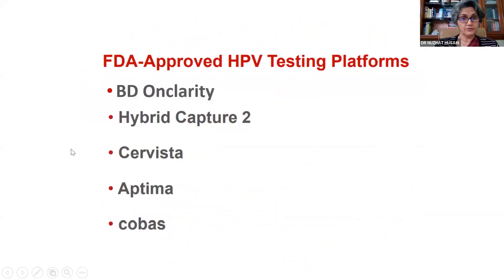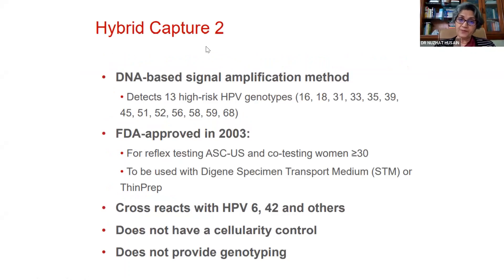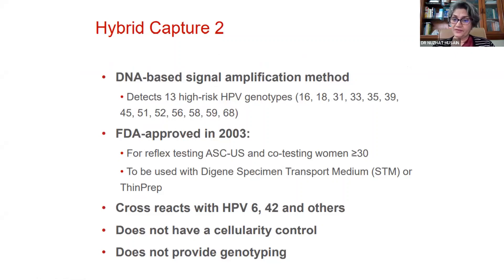The FDA-approved platforms currently available are BD Onclarity — the last one added in 2018 — the Hybrid Capture which was the first platform in 2003, Cervista, Aptima, and Cobas. The Hybrid Capture is based on those 13 HR-HPV genotypes but does not distinguish 16 and 18 — it does not genotype. After study, it was found to also cross-react with types 6 and 42, causing false positivity. An important consideration when selecting a test is having a cellularity control, since you're collecting fluid-based cytology and testing it for DNA — if there aren't enough cells, the test will be negative.